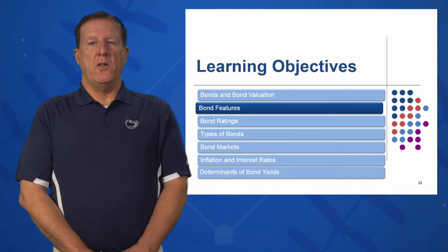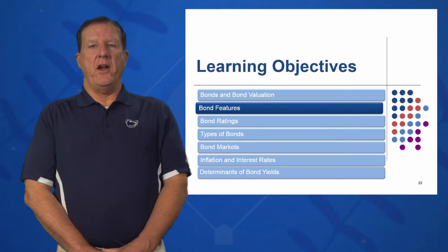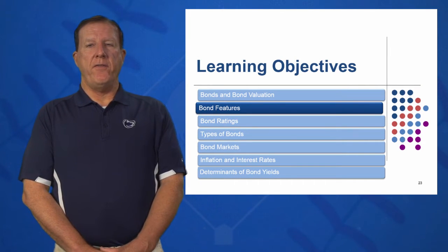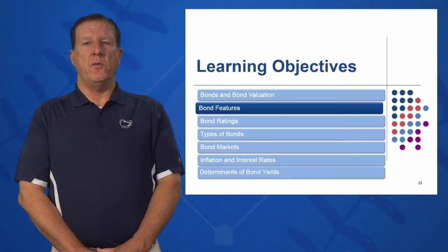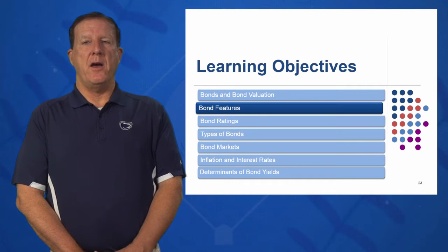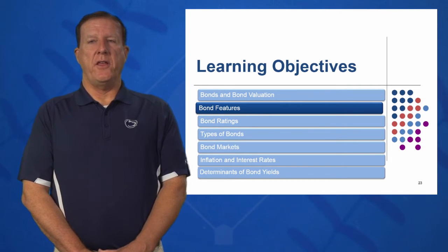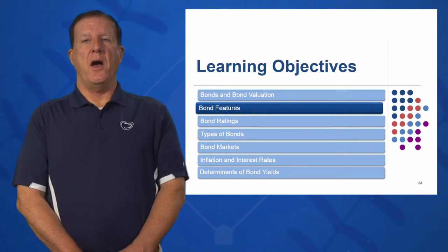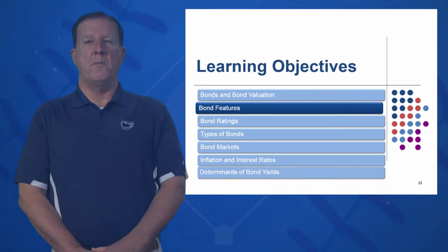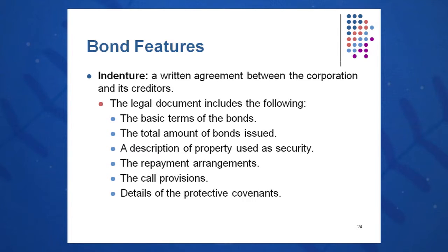In Learning Objective 2, we're going to look at various and sundry features of bonds — what makes up a bond, what is a bond indenture, and some of the terminology that is common to bonds across the board. When you buy a bond, you will get and sign an indenture. An indenture is a written agreement between the corporation and you, the lender.